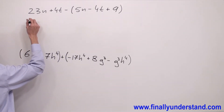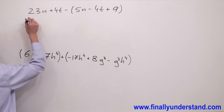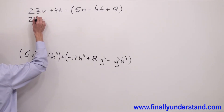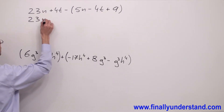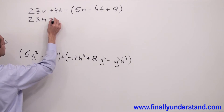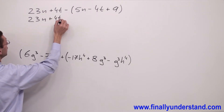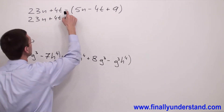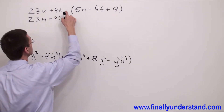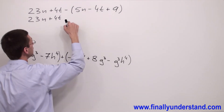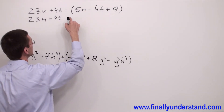Let me copy everything that is not in parenthesis first. So I have 23n plus 4t, and I have to multiply this negative sign by every single sign inside of the parenthesis.